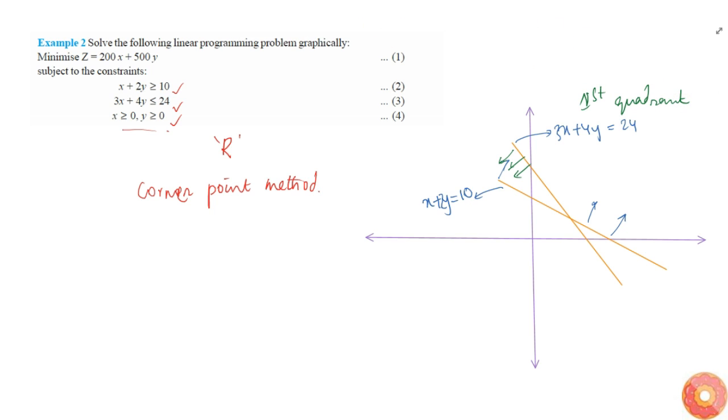Finally, the mixture of all these constraints will be this region, this part of the region. Here we get the region R, this is region R.